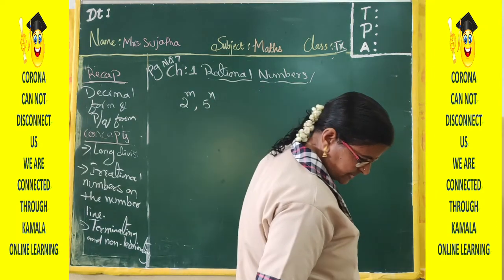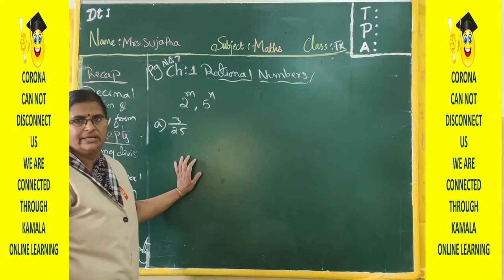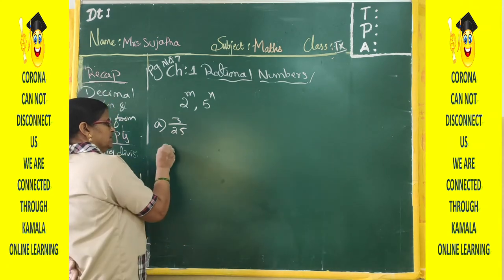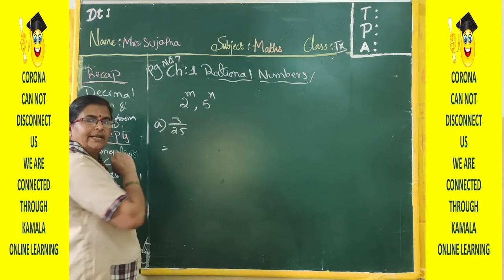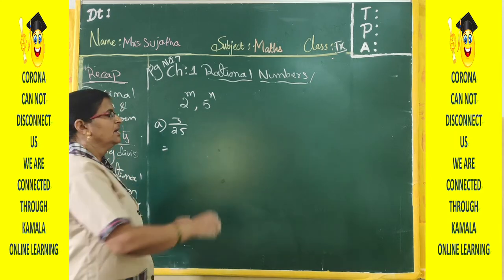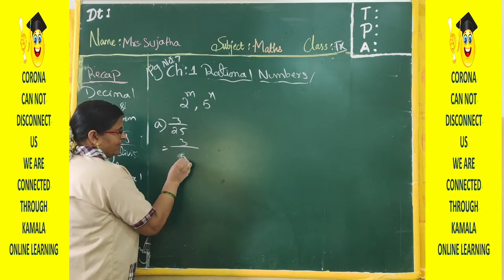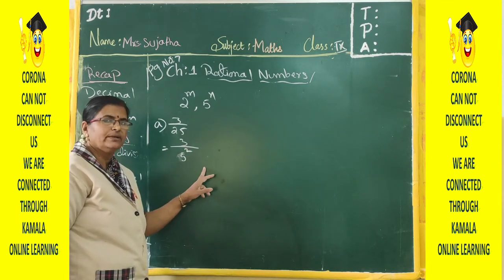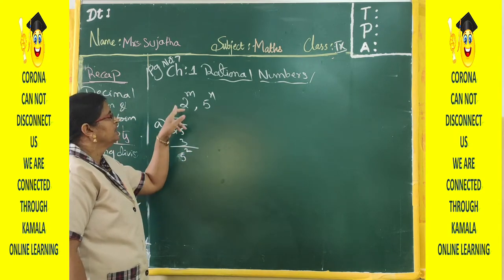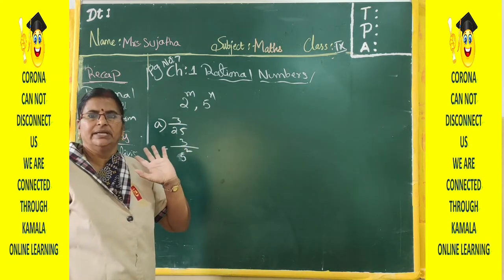First example: 3 by 25. Take the denominator 25. The prime factorization of 25 is 5 squared — that is 5 into 5. The base is 5, which is in the form of 5 to the power n. So the fraction 3/25 is a terminating decimal.